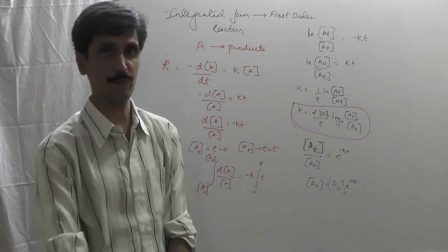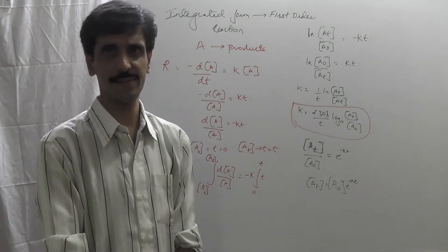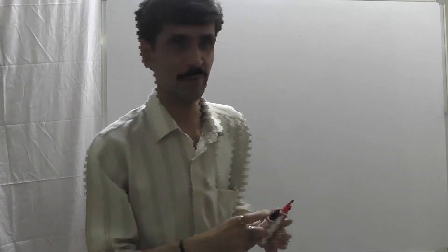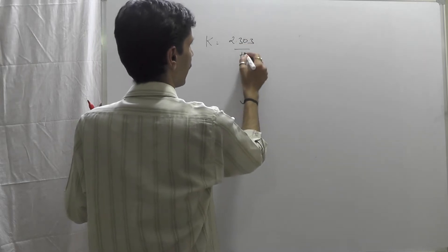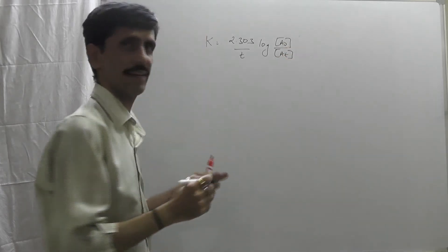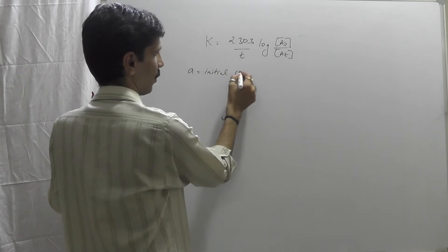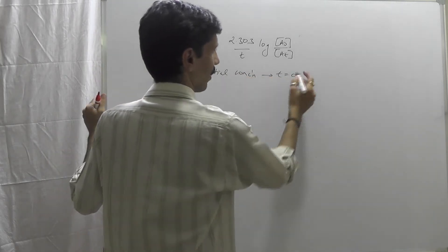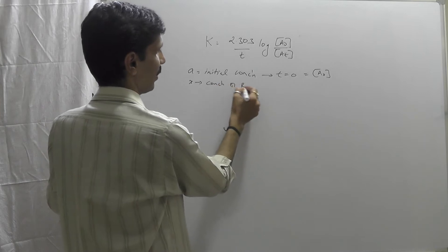Once we have derived the integrated rate law equation, there are some more points to understand. The integrated rate equation is K = 2.303/T × log(A0/At). Now suppose A is the initial concentration at T equals 0, so that is A0. Let X be the concentration of the reactant that has decreased over the time interval from T=0 to T.